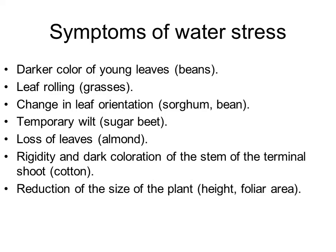Some of the symptoms used in the past for detecting water stress include the darker color of young leaves in the case of beans (Phaseolus). Leaf rolling is a very common symptom in grasses. Also the change in leaf orientation that can occur in sorghum or beans, and temporary wilt like that occurring in sugar beet. The loss of leaves in almonds is a very late symptom, meaning water stress has to be very severe. The rigidity and dark coloration of the stem terminal shoot in cotton. In general, we can always detect stressed plants in parts of the field by looking at smaller plants in terms of height or leaf area.